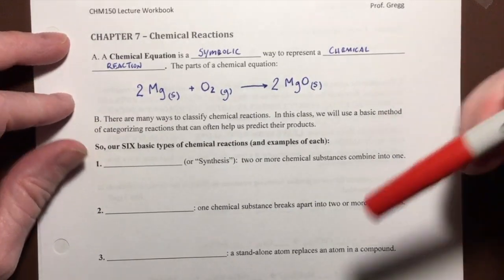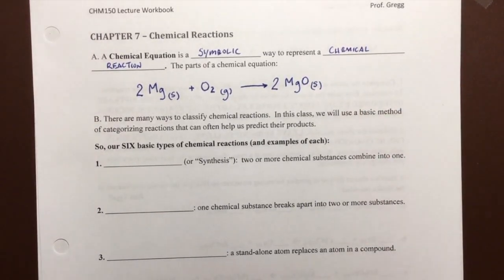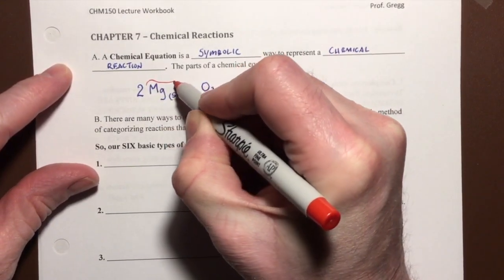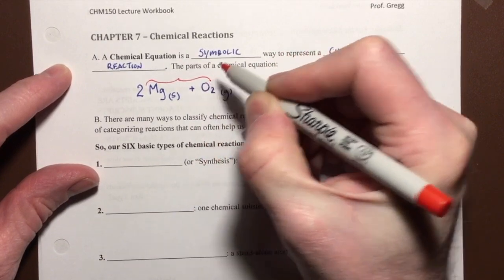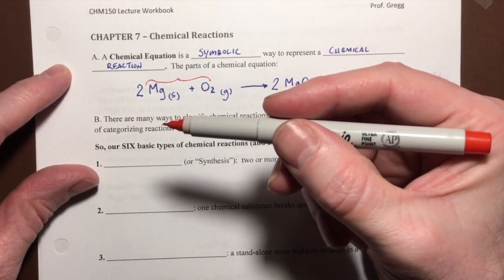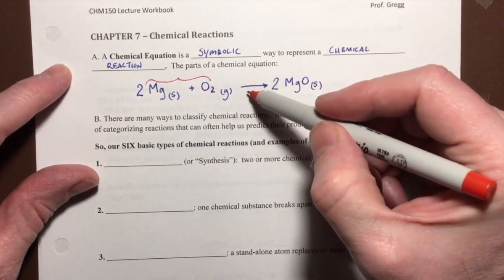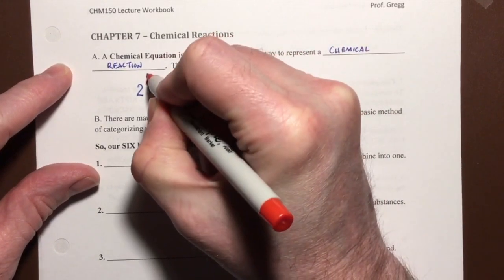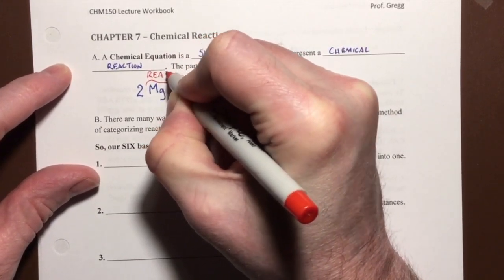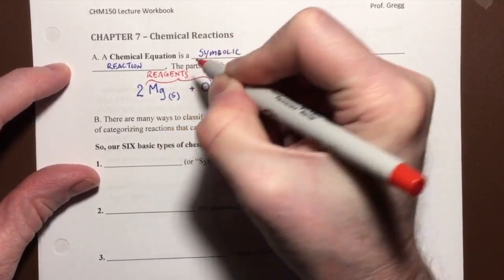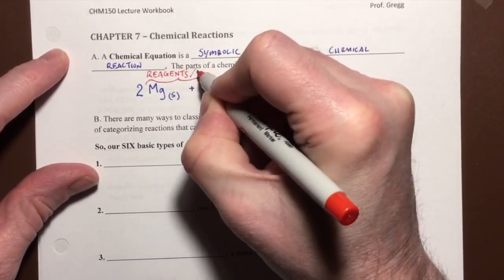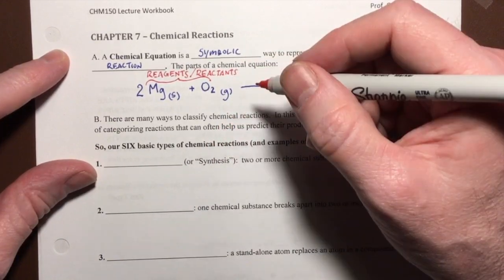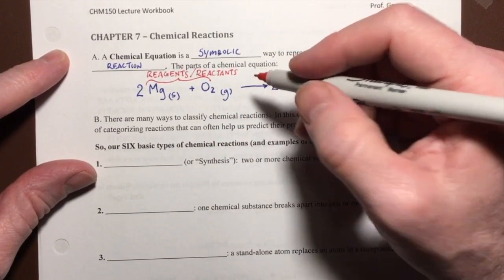There are different parts of this chemical equation and we need to identify those parts. Any chemical substance on the left-hand side of the chemical equation, to the left of this arrow, are called reagents, and they can also be called reactants. Either word is acceptable; they mean the same thing.